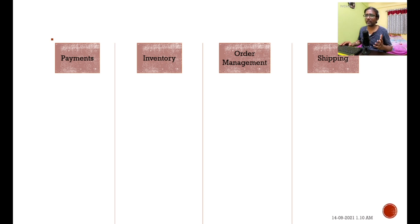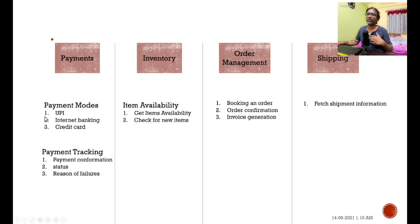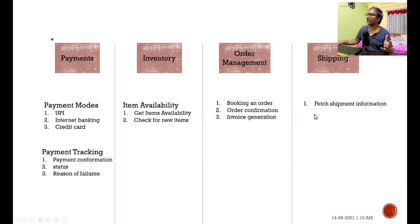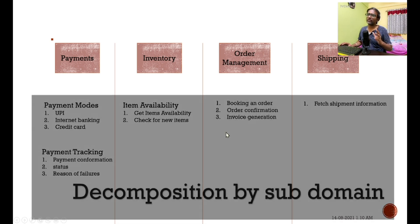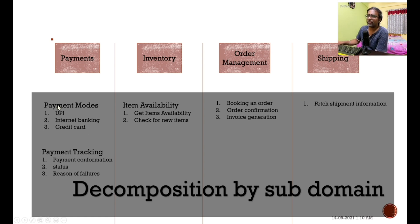If you go a little bit more granular, when you talk about payment we have different payment methods and payment tracking. When you talk about inventory, we have inventory availability and many more things. Similarly for order management and shipping. These things — payment methods, payment tracking, inventory details — are called decomposition by subdomain.